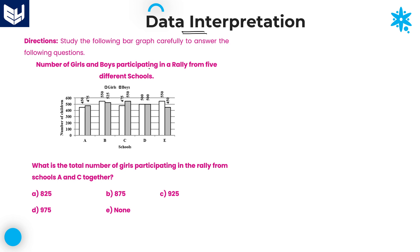First of all, we need to read the information carefully and then solve the questions according to the given information. The information is about the number of girls and boys participating in a rally from 5 different schools.